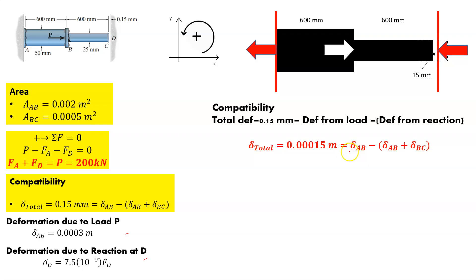And that's the way this equation looks. So it's the displacement of AB minus the displacement, the quantity of the displacement at AB plus the displacement of BC. So both segments of that rod is equal to our compatibility condition.